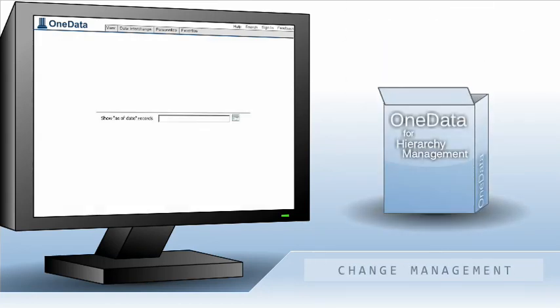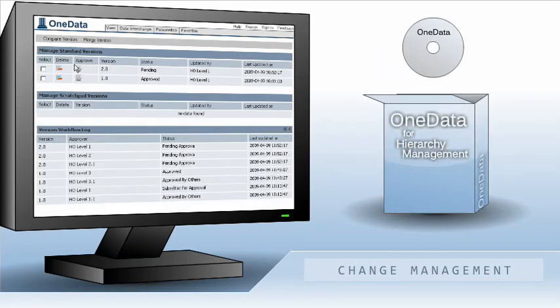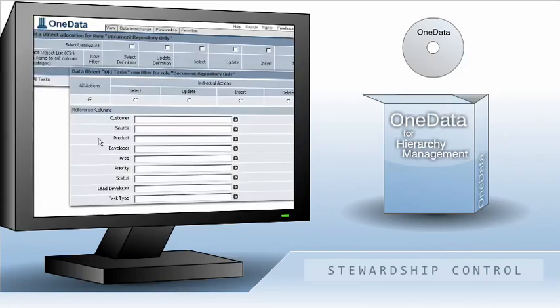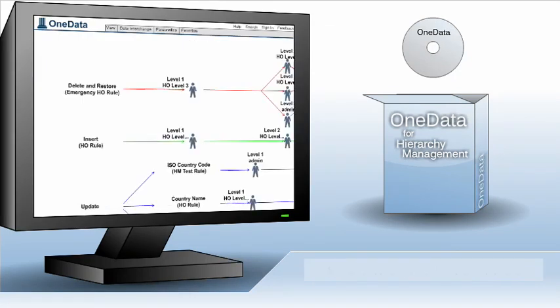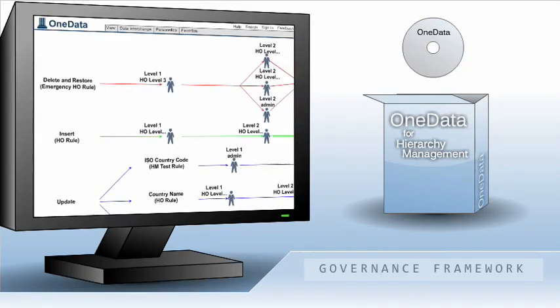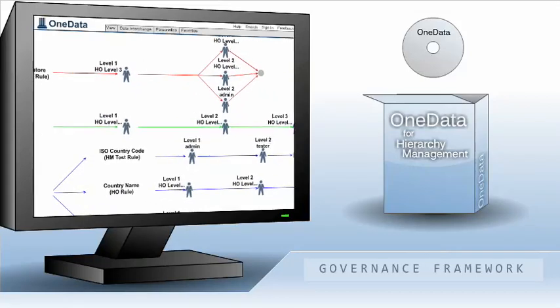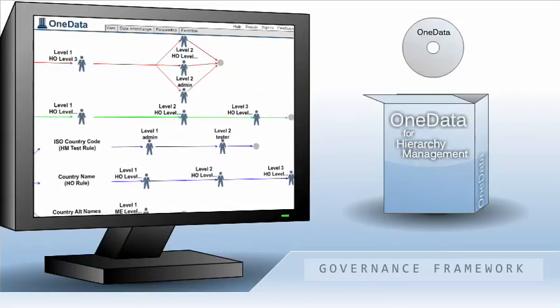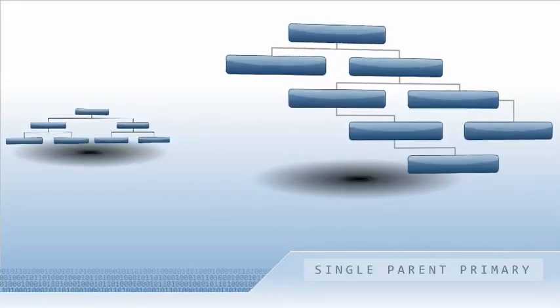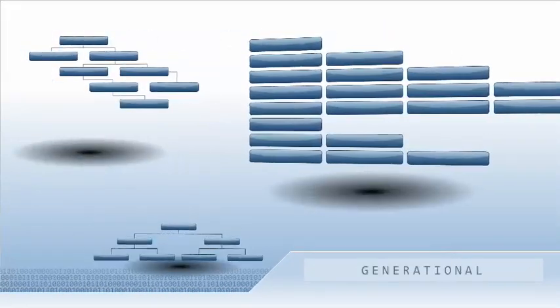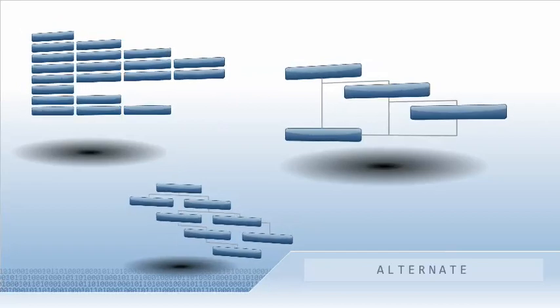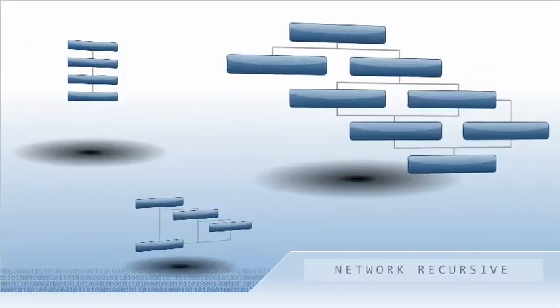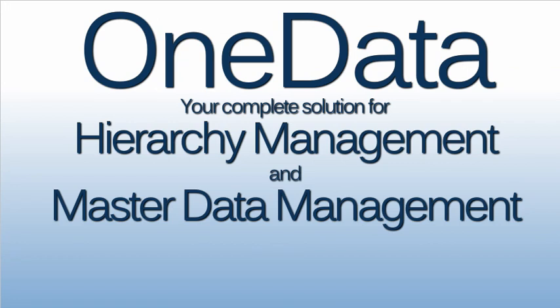OneData comes out of the box with different change management strategies, granular stewardship control, and a complete data governance framework with the ability to configure sophisticated workflows and approval processes. Whether you need to manage any structure with data relationships — either as a point solution to just manage hierarchies or a more comprehensive master data management solution — OneData has the power and flexibility to meet your needs.